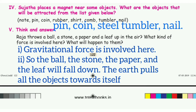Think and answer: Raja throws a ball, a stone, a paper, and a leaf up in the air. What kind of force is involved here? What will happen to them? The answer is: gravitational force is involved. The ball, the stone, the paper, and the leaf will fall down, as the earth pulls all objects towards itself.